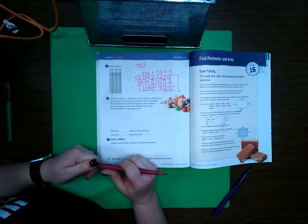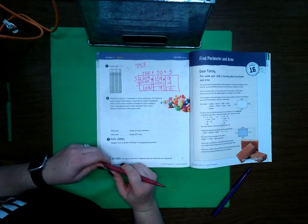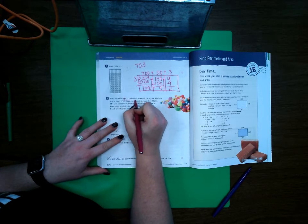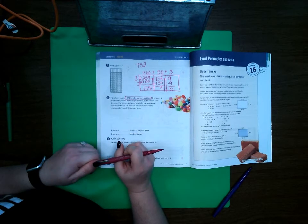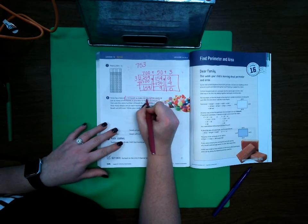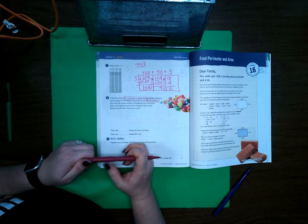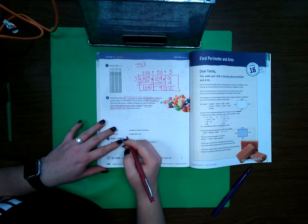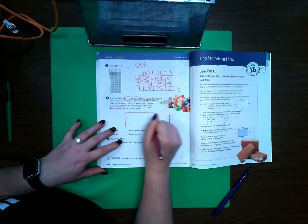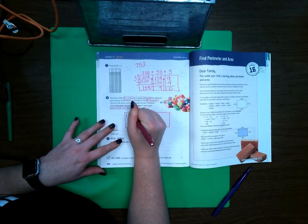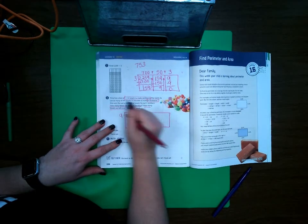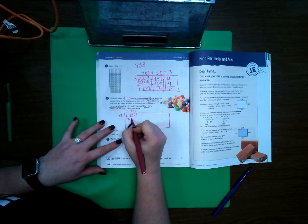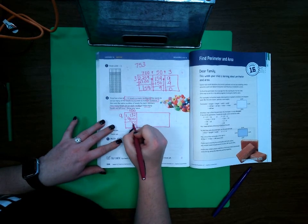Number 8: Trina has a box of 1,132 beads to make necklaces. She wants to use as many of the beads as possible to make 9 necklaces. She uses the same number of beads on each necklace. How many beads are on each necklace? How many beads are left over? So we're going to use our area model to set this up: 1,132 divided by 9. 9 times 100 is 900, which leaves 232.